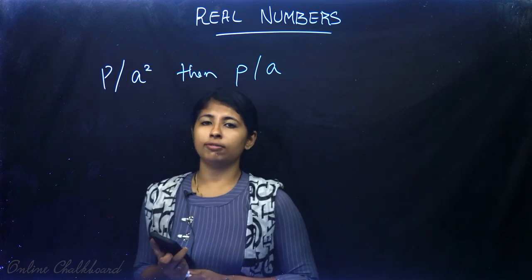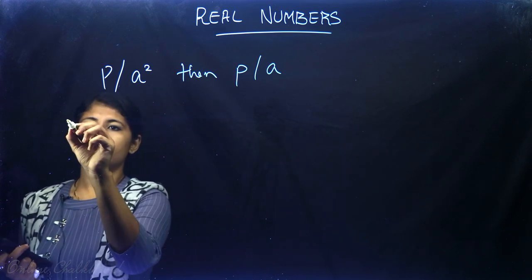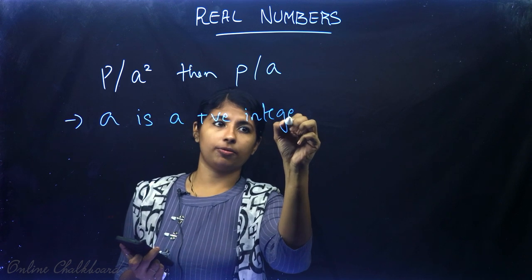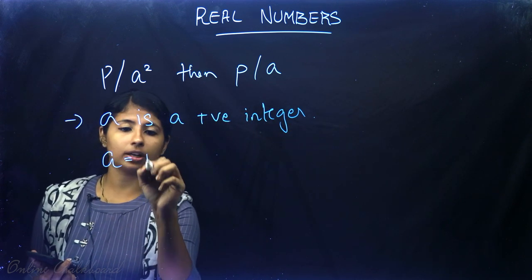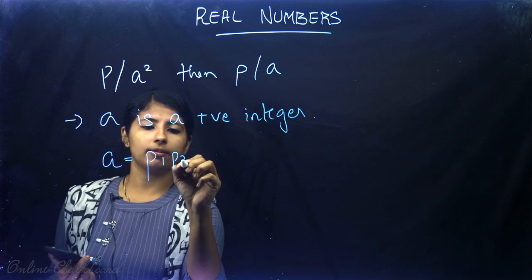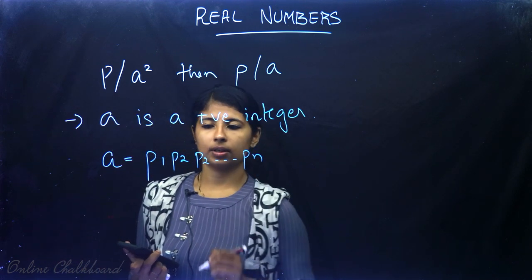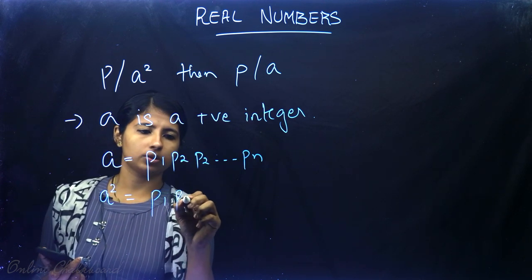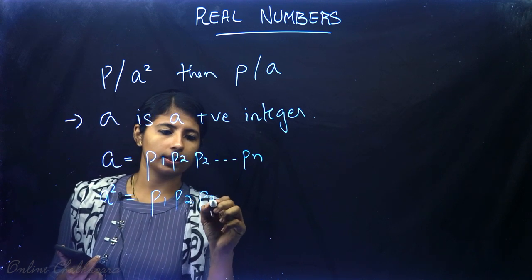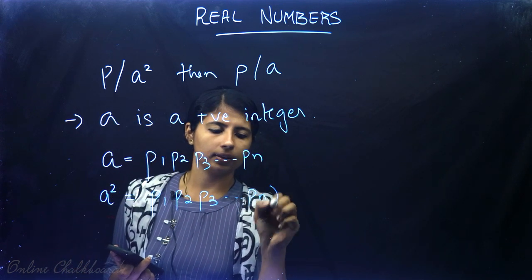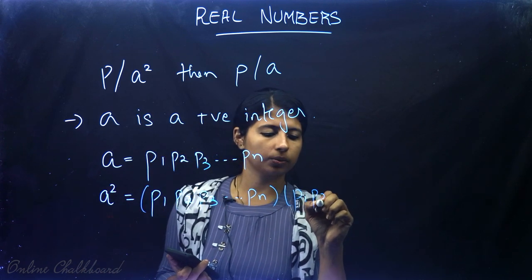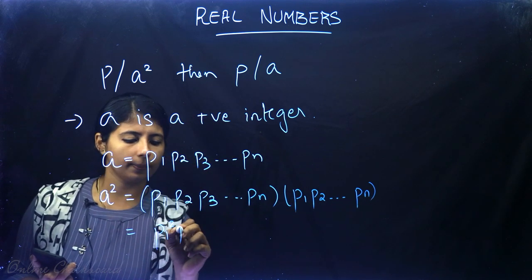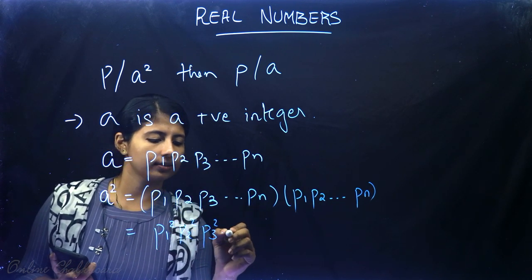We need to prove this. If A is a positive integer, then by the fundamental theorem of arithmetic, A can be written as a product of primes: A = P₁ · P₂ · … · Pₙ. Therefore A² = (P₁ · P₂ · … · Pₙ)² = P₁² · P₂² · … · Pₙ².